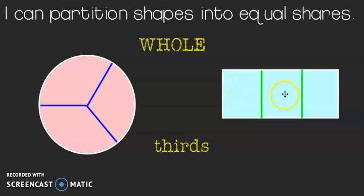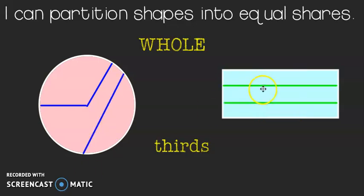Same over here. One third plus one third plus one third makes up my whole. Here's another way I can partition my rectangle. Having my lines go horizontal, as long as they are equal parts, I can say that this is thirds.